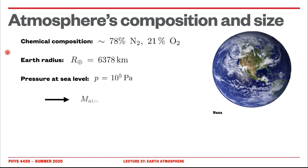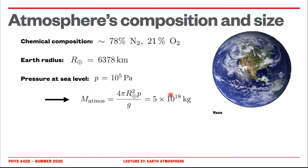We can find the mass of the atmosphere simply by taking the pressure, which is a force per unit area, multiplied by the unit area, which is the entire surface of the sphere, and if we divide by g — gravitational acceleration, about 9.31 — we can move from force to mass. We find that the mass of the atmosphere is 5×10^18 kilograms, which is about one millionth of the mass of the Earth. So it's small, but far from zero.